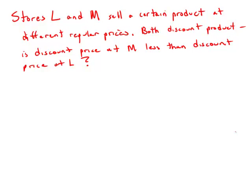Stores L and M each sell a certain product at a different regular price. If both stores discount the regular price of their product, is the discounted price at store M less than the discounted price at store L? I'm going to use the variables L and M to denote the prices before discount. Statement 1 tells us that at store L, the discounted price is 10% less than the regular price — a decrease of 10% — meaning it's 90% of the regular price, or 0.9L.